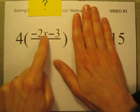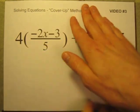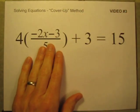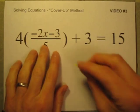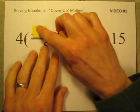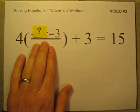So this chunk on the top must be equal to 15. So negative 2 times x minus 3 is equal to 15. Let's keep going. Negative 2 times x minus 3 is equal to 15. Well, let's cover this up. What minus 3 is equal to 15?